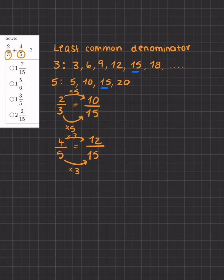Now that I've converted both fractions to have the same least common denominator, I will add them. So 2/3 was 10/15, and 4/5 was 12 over 15.